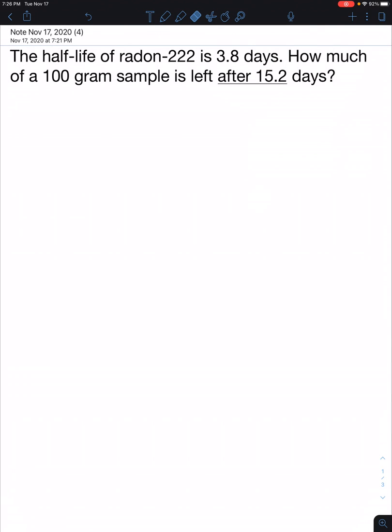In this video we're going to take a look at how to calculate the basics of half-life, so how much is remaining after a certain amount of time has elapsed. The equation we're going to use is the basic half-life equation: A = A₀(1/2)^(t/h).